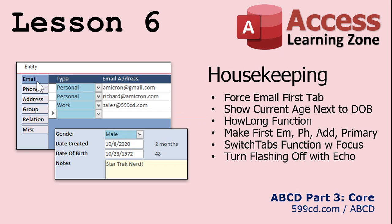Lesson six has a lot of stuff in it — some more housekeeping. We're going to force the email tab to be the first tab that's displayed, just in case you leave it on a different tab and come back to that form. We're going to show the current age next to both date of birth and date created. Date created is like your customer-since date, so you know this person has been a customer for two months, for example. This way, if you're going to call a customer, you get a general idea of how old they are, which could be handy on a sales call. I'll give you my how-long function — which took me hours to write — to my code vault and we'll put it in this database. We'll also make the first email address, phone number, or address that's added for each person set the primary automatically.